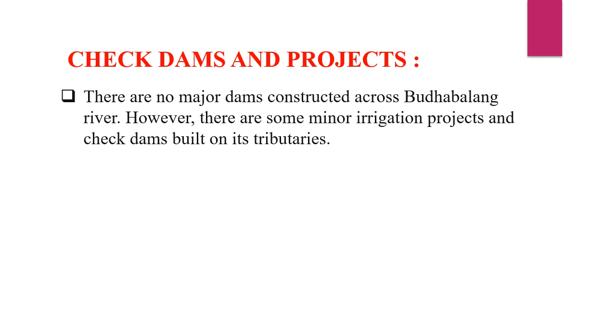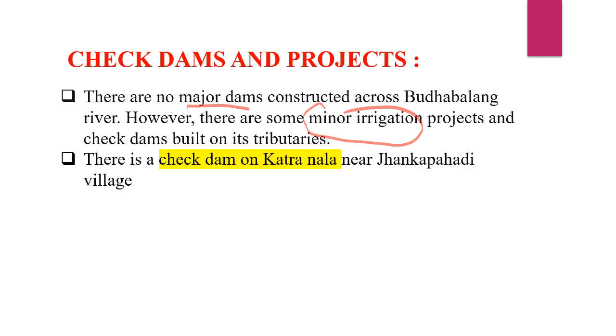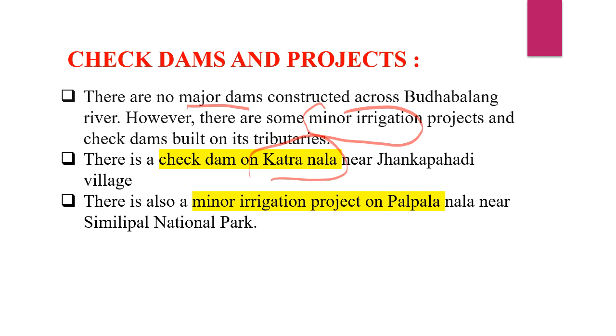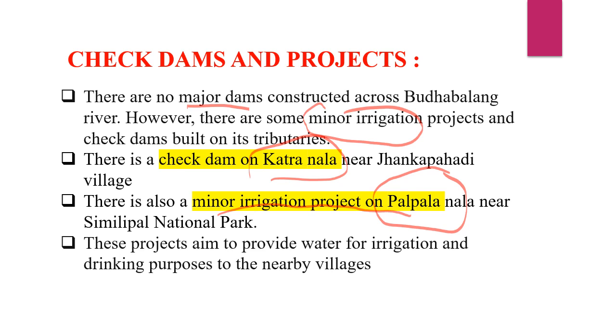Now let us look at some check dams and projects. There are no major dams constructed across this river; only a few check dams on its tributaries and some minor irrigation projects exist. There is a check dam on Katranal, the tributary of Budha Balang, situated near Jankapalpahari village. These projects aim to provide water for irrigation and drinking to nearby villages.